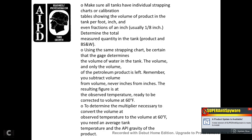Make sure all tanks have individual strapping charts and calibration tables showing the volume of product in the tank per foot and inch — even fractions of an inch, usually one-eighth — to determine the total measured quantity and the bottom sediment and water. Using the sample strapping chart, determine the volume of water in the tank and the volume of product only. Subtract the volumes — remember, always subtract volumes, never inches. The resulting figure is the observed volume that needs to be corrected to 60 degrees Fahrenheit.